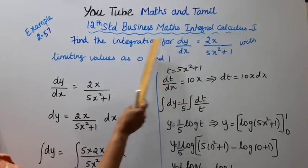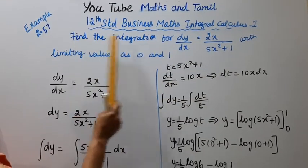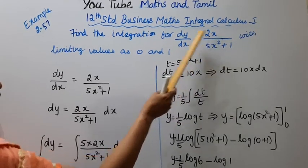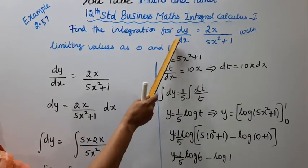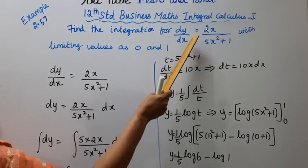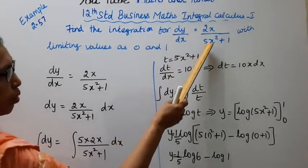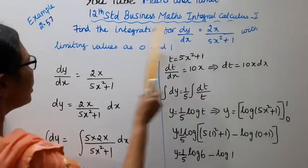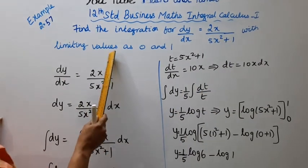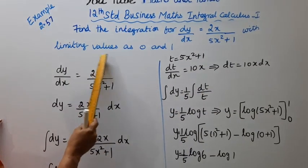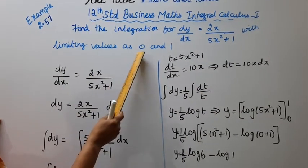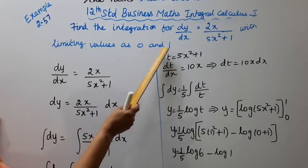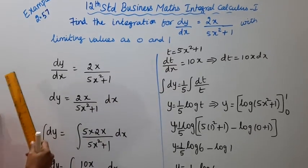We cannot do direct integration, so we need to use a different method. dy by dx equal to 2x by 5x squared plus 1, with limiting values: lower limit 0, upper limit 1. We will apply the limits 0 and 1.